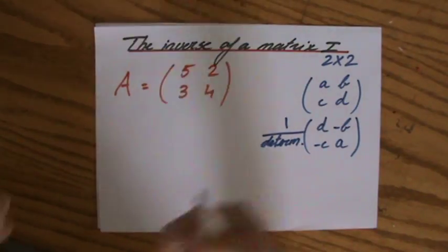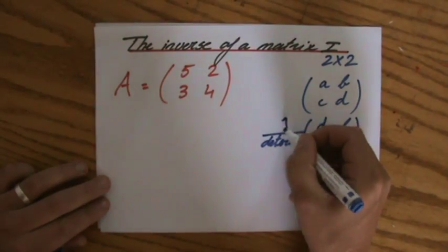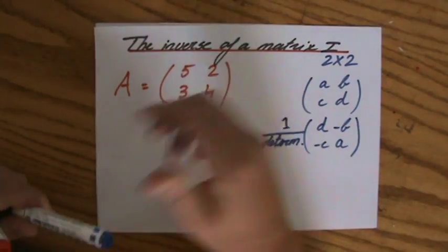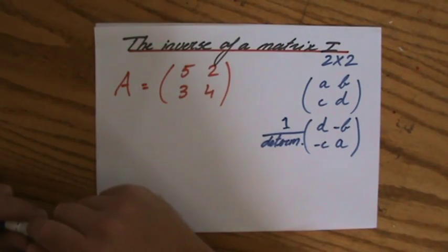Determinant. You can't read that, but it says determinant. 1 divided by the determinant. And I showed you in my previous video how to find the determinant.